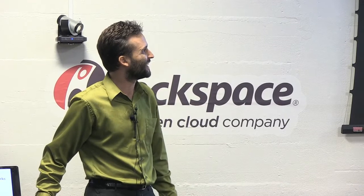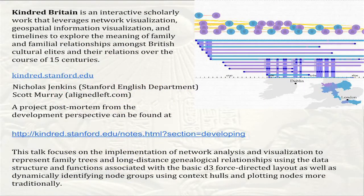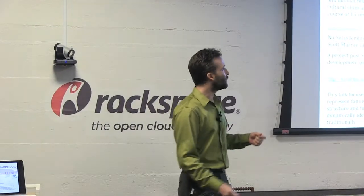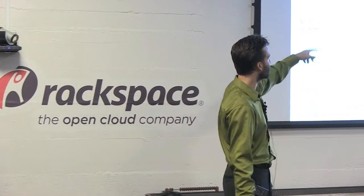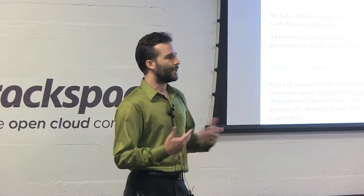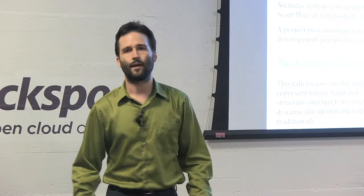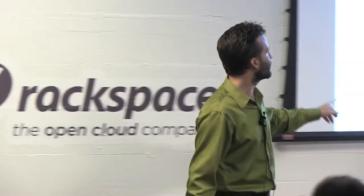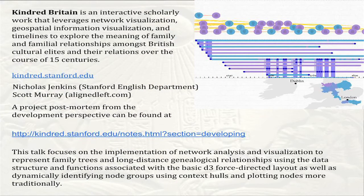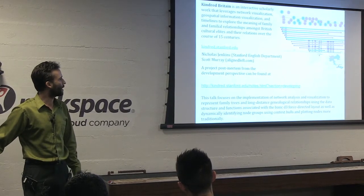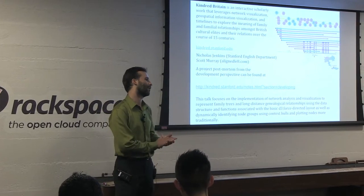One of the projects we just finished working on was something called Kindred Britain. It's an interactive scholarly work that looks at the relations between British cultural elites. We have a network of 30,000 individuals, roughly 4,000 of which are mentioned in the Oxford Dictionary of National Biography. They're all related to each other — 4,000 people who are important, and 26,000 people who appear only because they connect the important people. Kindred Britain is a public site at kindred.stanford.edu. It uses network visualization, timelines, geospatial visualization, and a lot of text processing, and it's all written in D3.